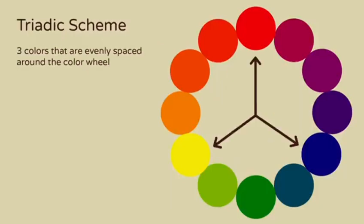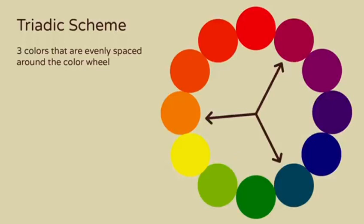A triadic color scheme is made up of three colors that are evenly spaced around the color wheel. Again, these are just a few examples of triadic color schemes.